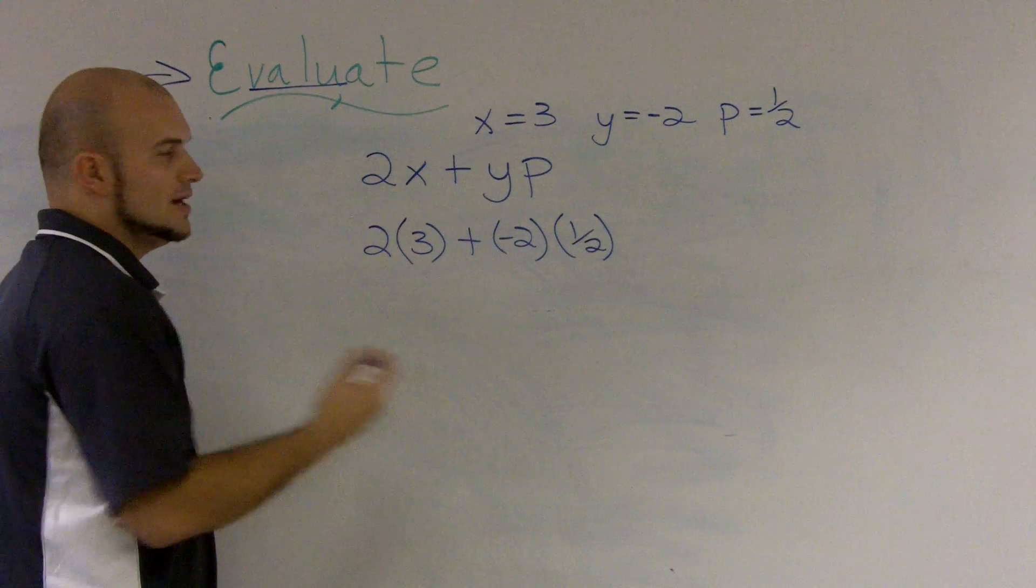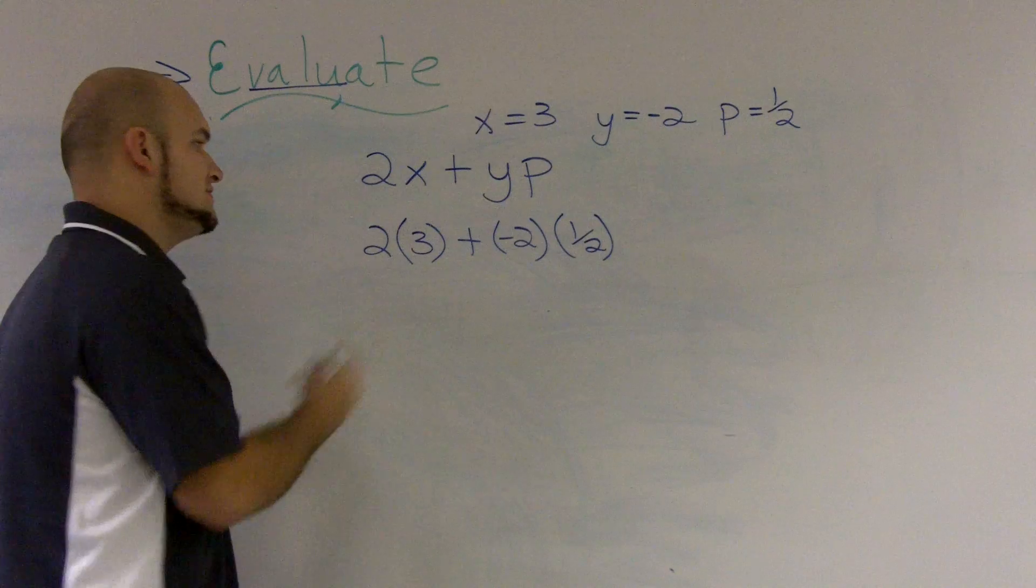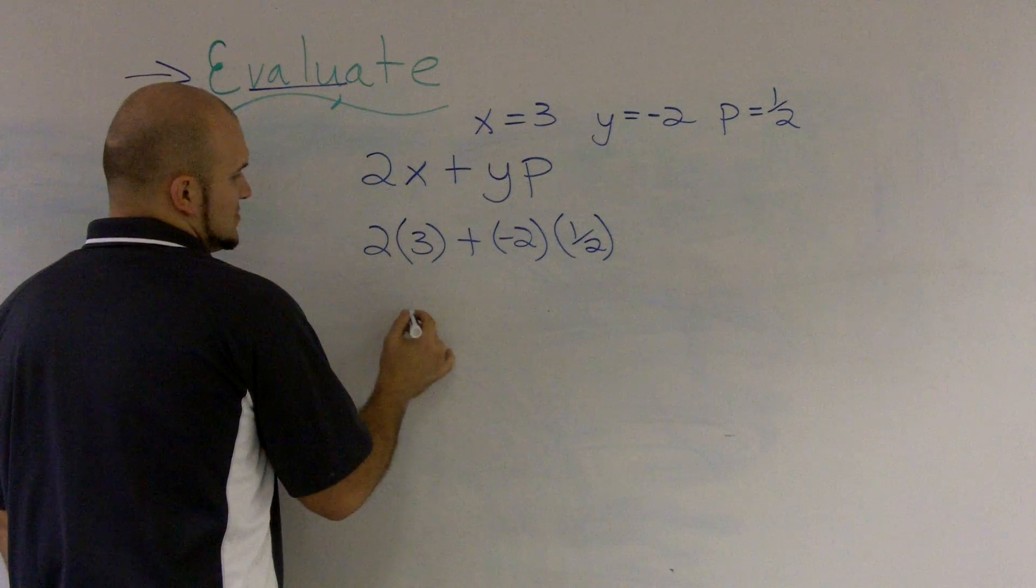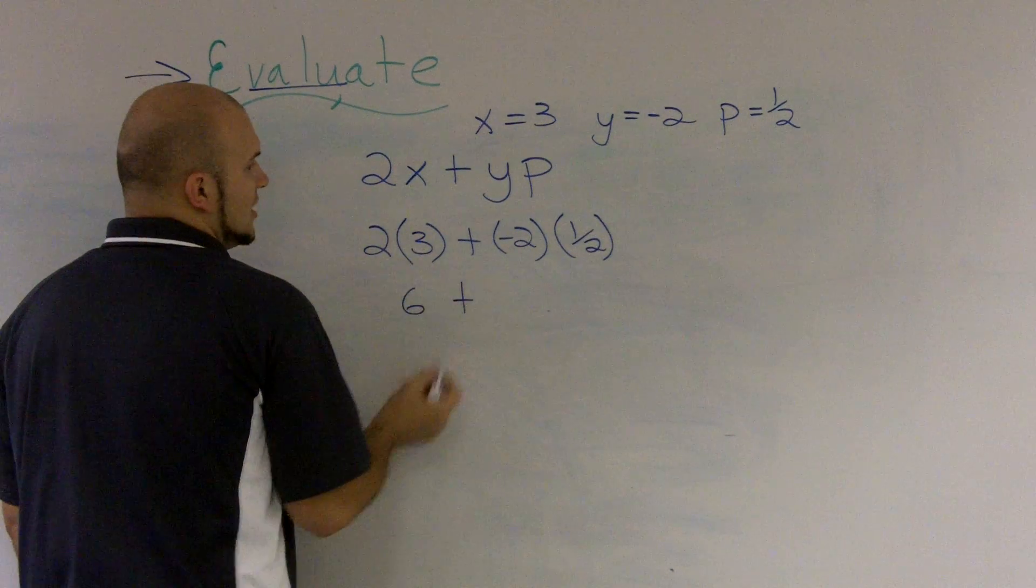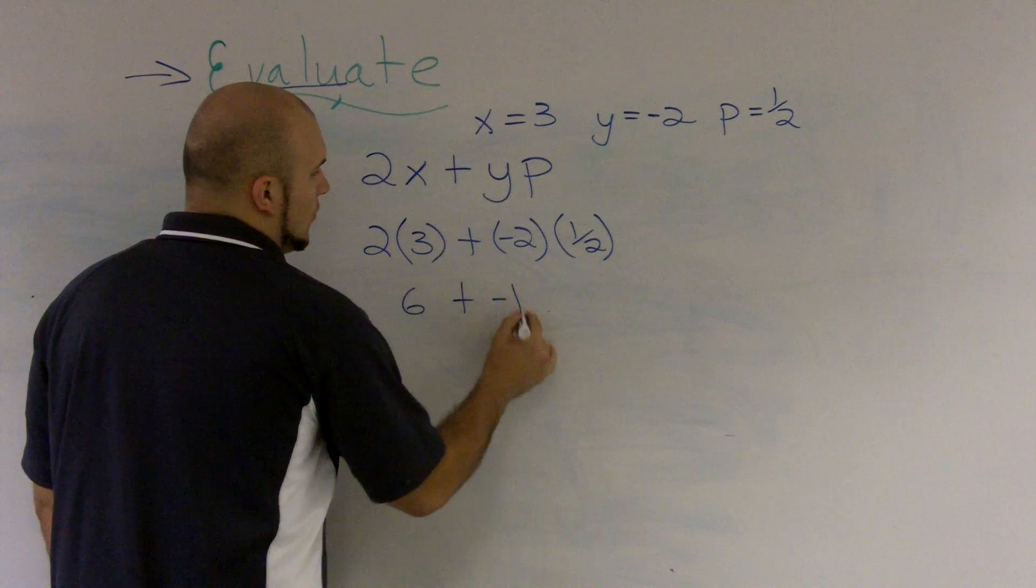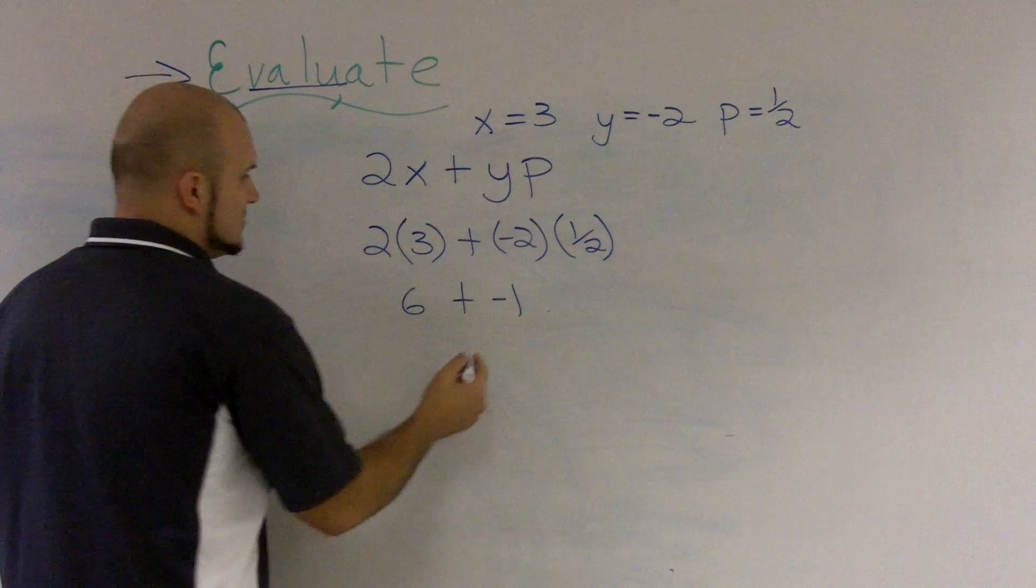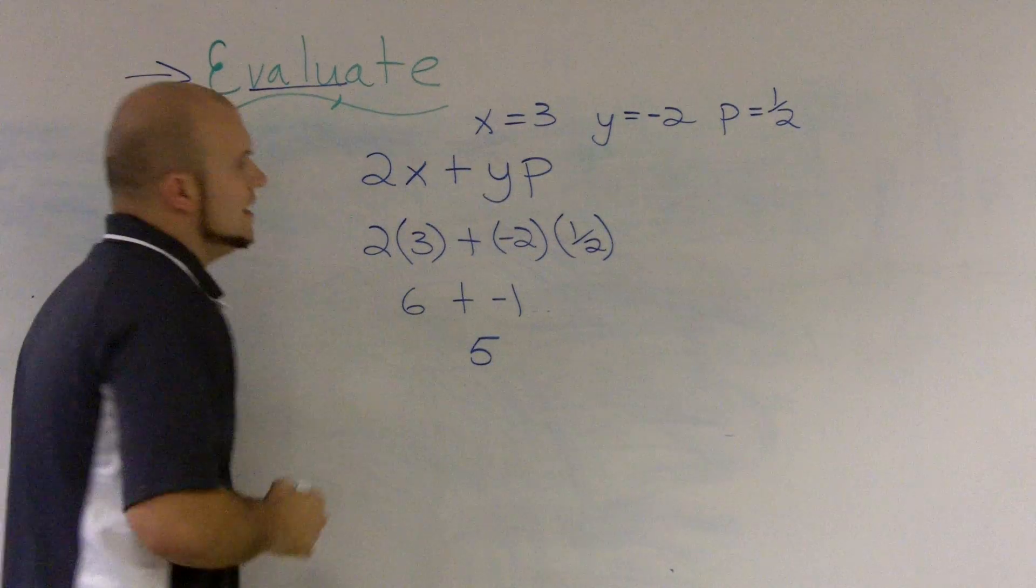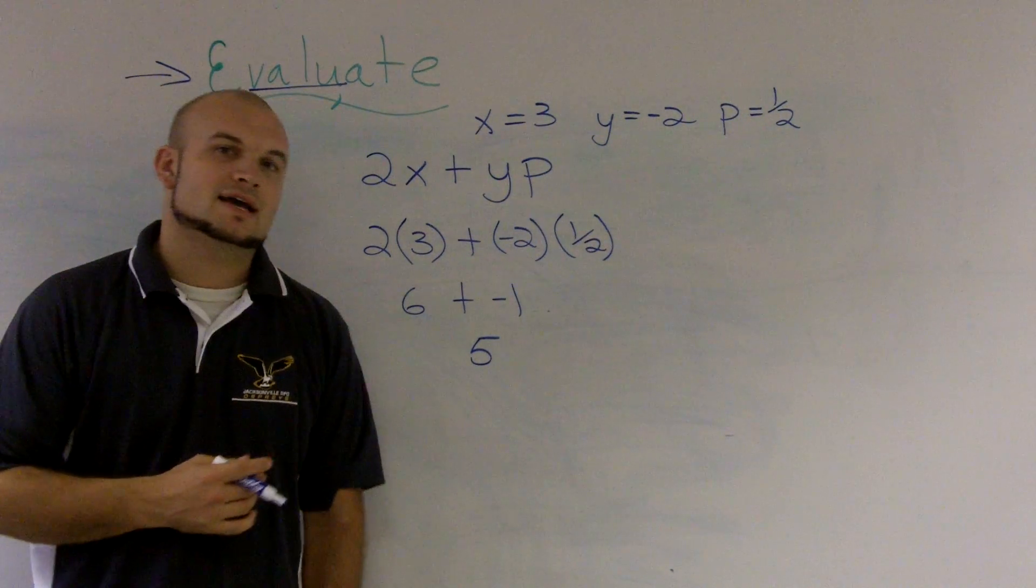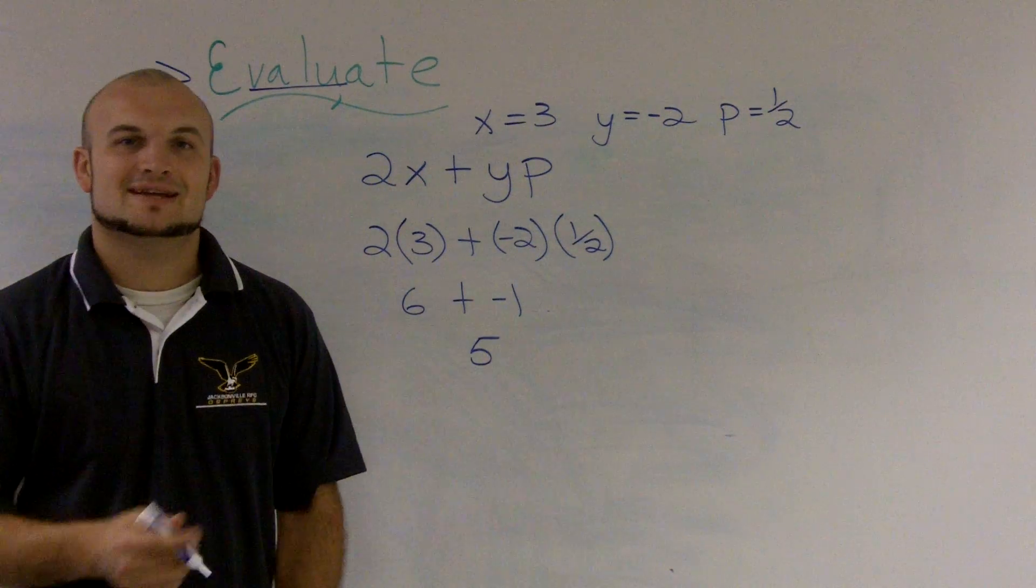So, now, I'm going to go ahead and use my order of operations. I'm going to do my multiplication first from left to right. So, I have 2 times 3, which becomes a 6, plus negative 2 times 1 half is going to become a negative 1, and then 6 plus negative 1 becomes a 5, and that is how you would simplify an expression. I'm sorry, that's how you evaluate an expression.